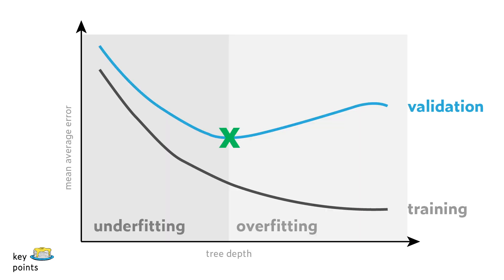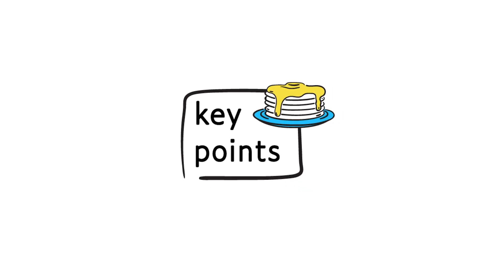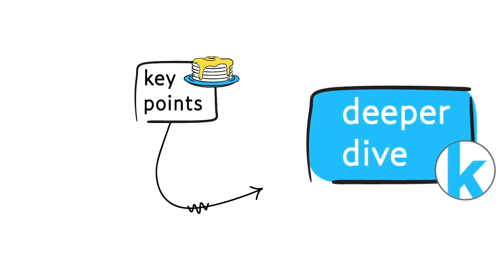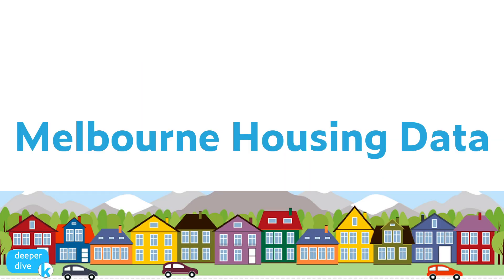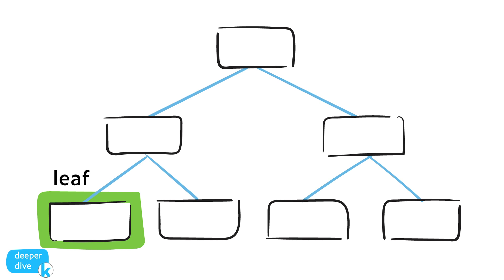What we really want to do is strike a balance between overfitting and underfitting. When we're trying to find that balance, one of the things we can do is modify our model's parameters. And while there are usually a good number of parameters we can modify, for our purposes we're going to focus on modifying the maximum number of leaf nodes in our decision tree regression model.